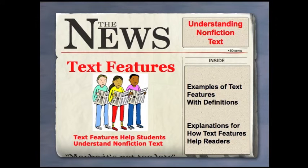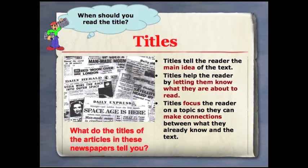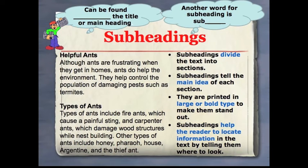Let's review what text features are and go over some examples. The text feature that's easy to recognize is the title. The title tells the reader the main idea of the text. Subtitles, which are not seen here, are also an example of a text feature which generally follow the title and provide a bit more detail about the topic. Headings or subheadings divide the text into sections and explain the main idea of those particular sections.